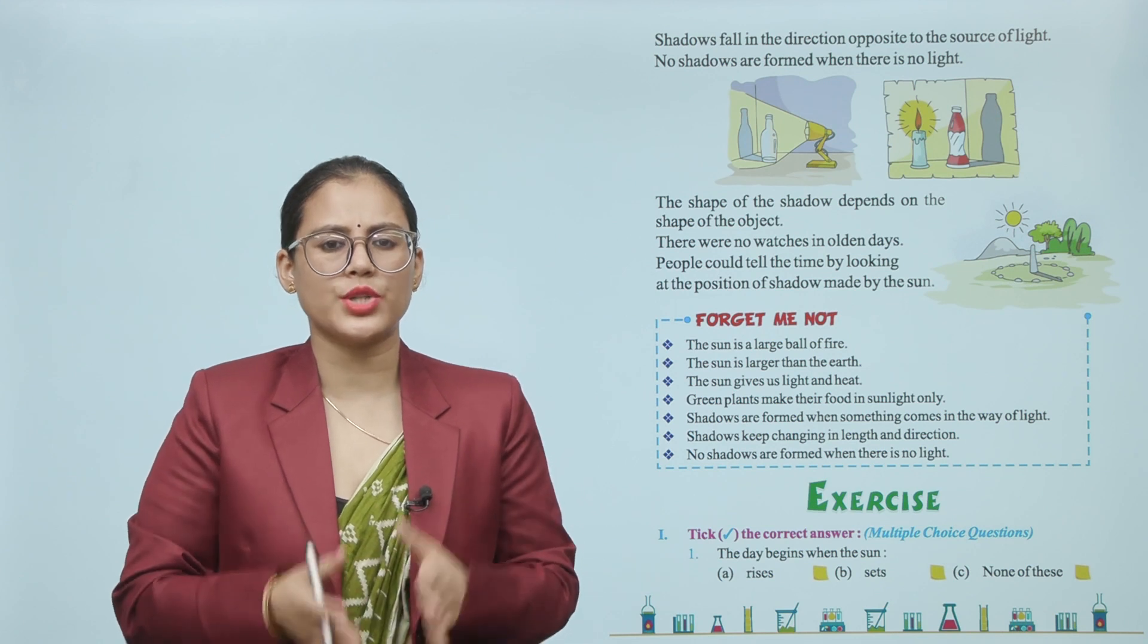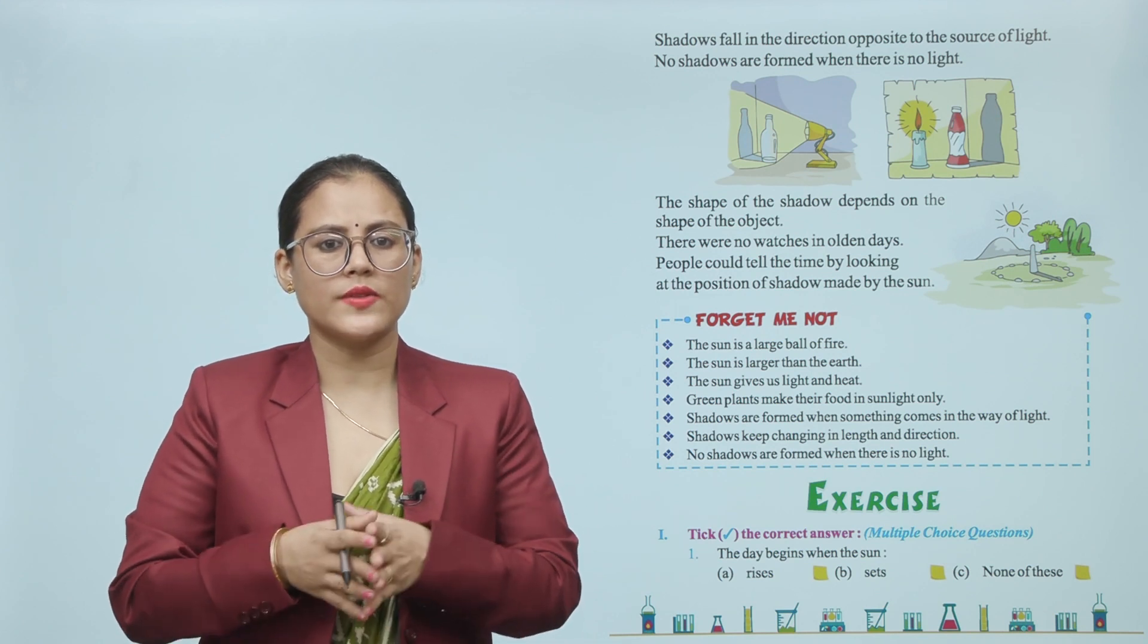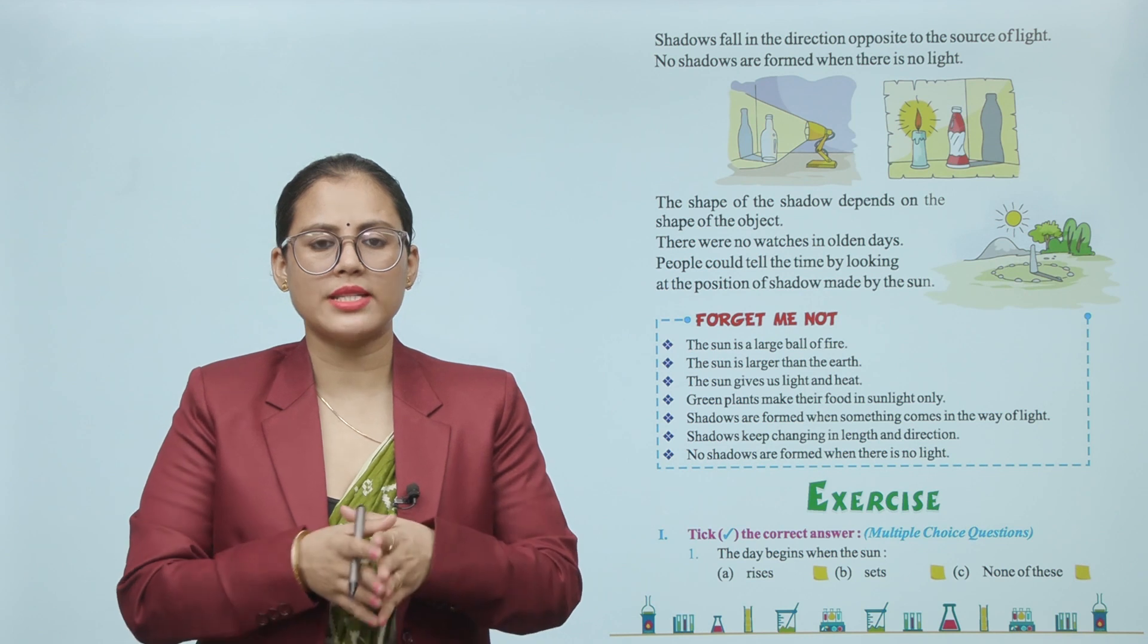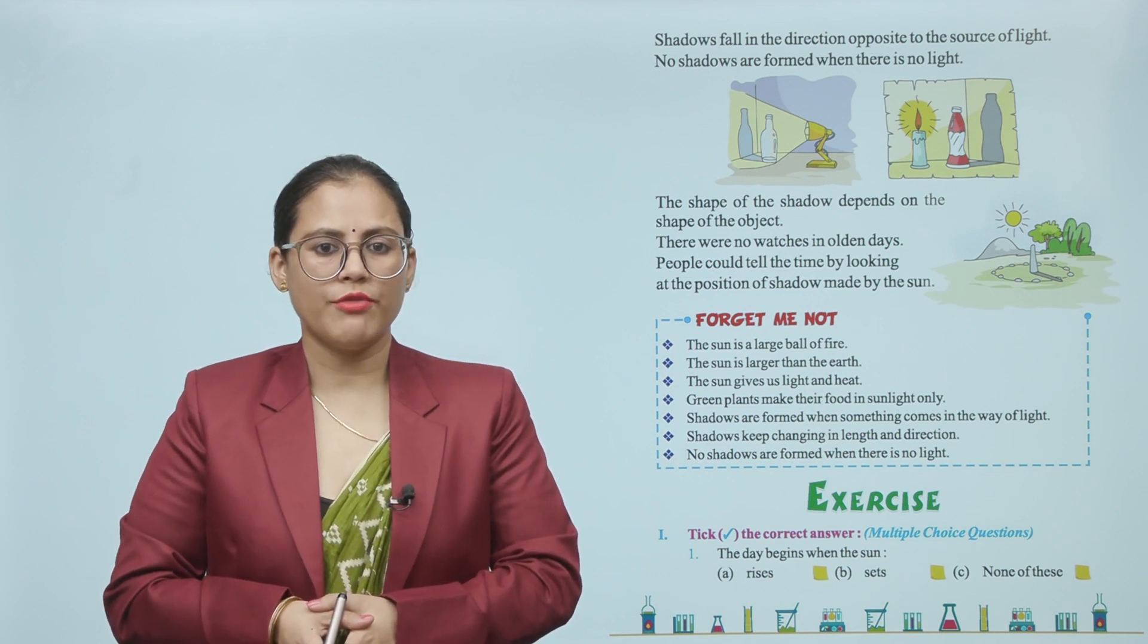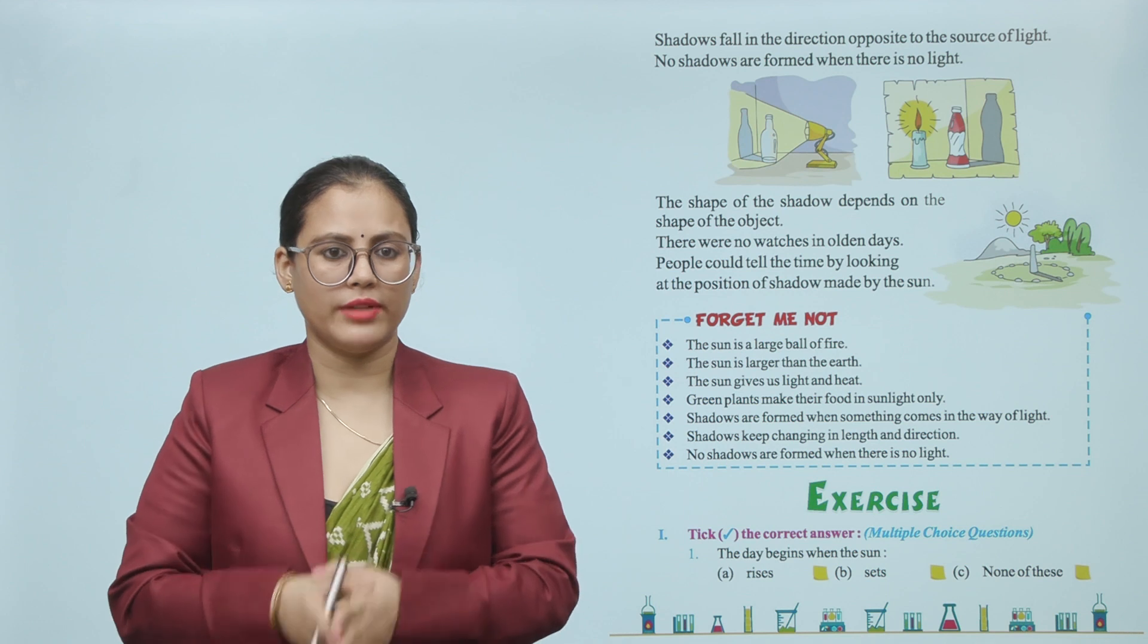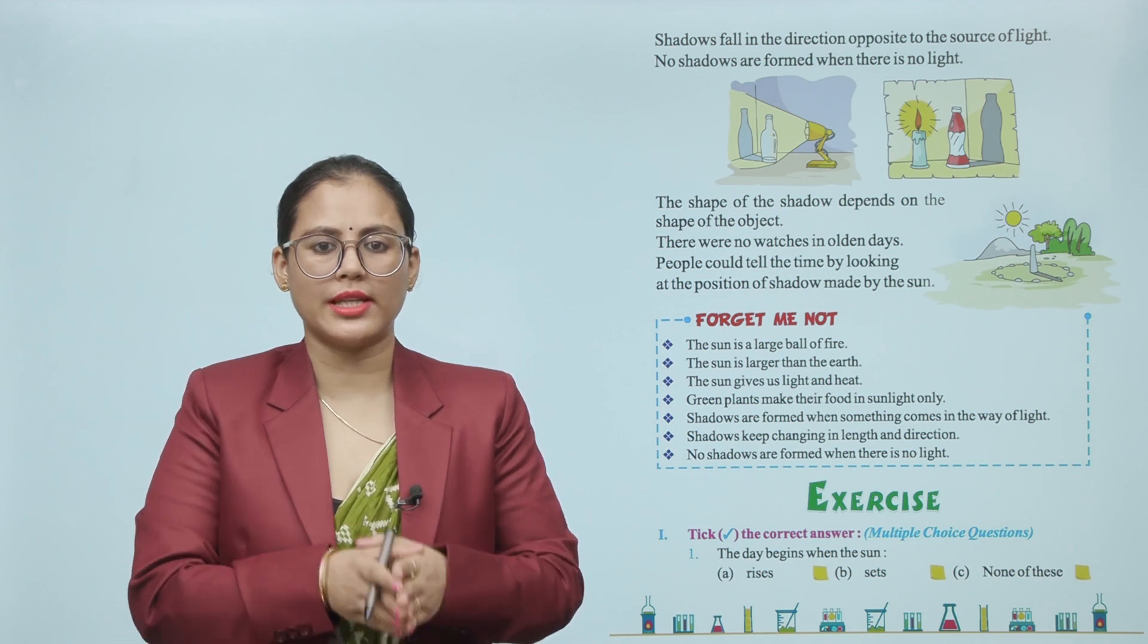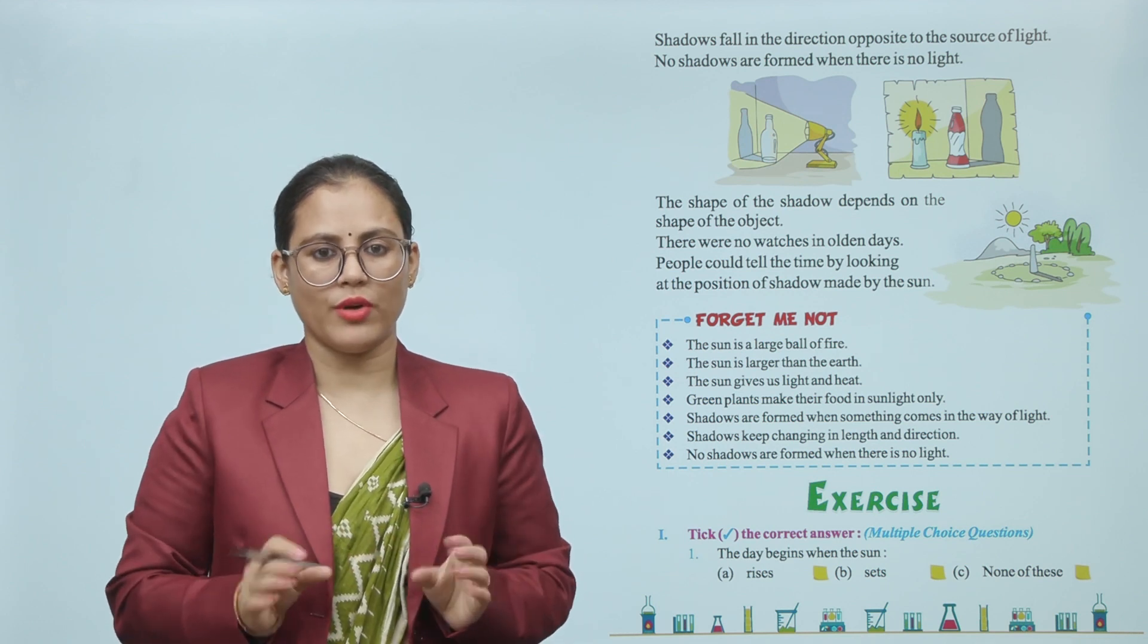Forget me not: The Sun is a large ball of fire. The Sun is larger than the earth. The Sun gives us light and heat. Green plants make their food in sunlight only. Shadows are formed when something comes in the way of light. Shadows keep changing in length and direction. No shadows are formed when there is no light.